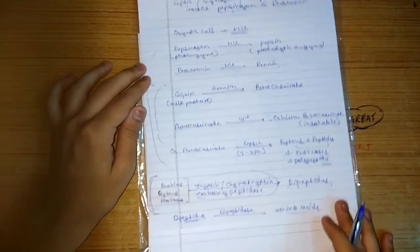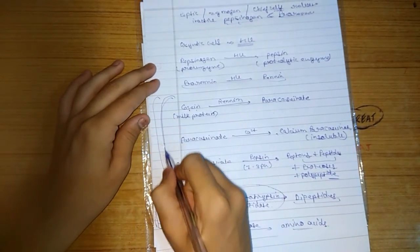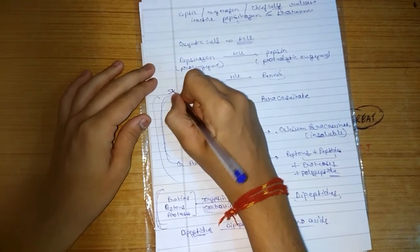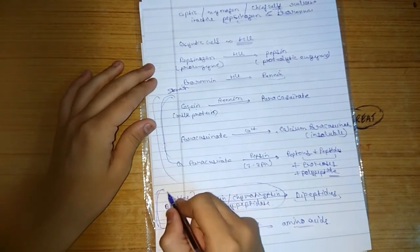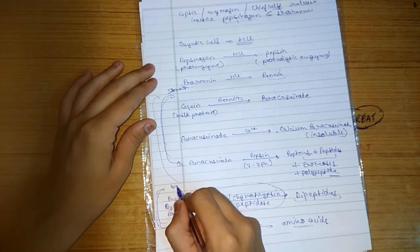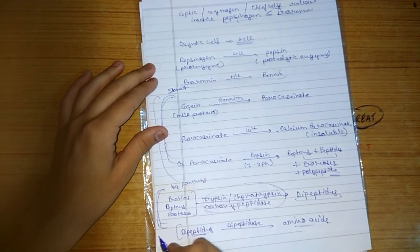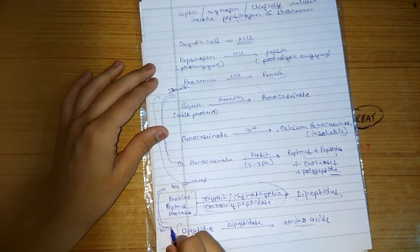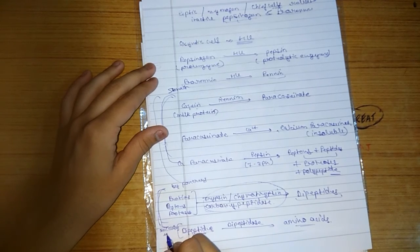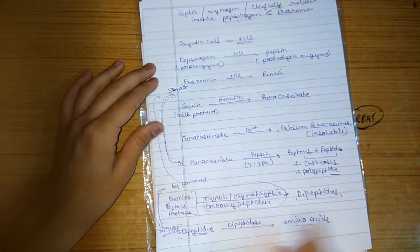So this is the digestion of protein in our stomach. This is by the pancreatic enzymes and this is the succus entericus.